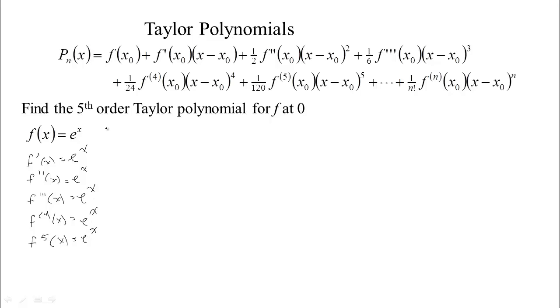And we're doing this at zero. So f of zero would be e to the zero. Well, any non-zero number to the zero is one. So f prime at zero is also one, and f double prime at zero is also one. No problem recognizing the pattern in the derivatives.